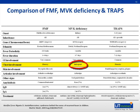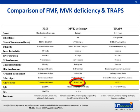Both FMF and TRAPS not uncommonly involve the pulmonary system, usually by means of pleural involvement, whereas such involvement is exceedingly rare in MVK deficiency. Amyloidosis — an untreatable and potentially fatal chronic condition related to chronic uncontrolled inflammation — is rather common in untreated Familial Mediterranean Fever, uncommon in TRAPS, and exceedingly rare in MVK deficiency. Although elevated levels of immunoglobulin class D can be seen in a minority of patients with FMF and TRAPS, it is always elevated in MVK deficiency, and that can be used as a diagnostic tool.